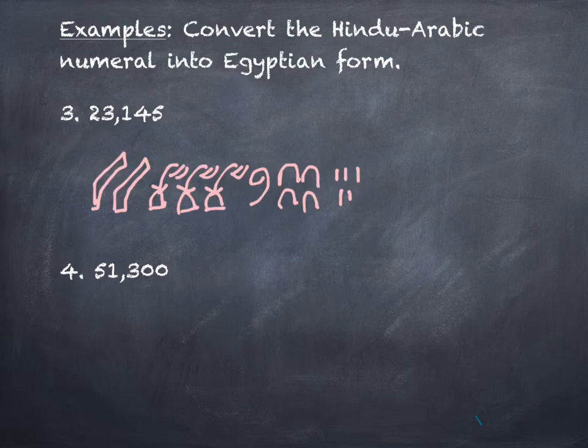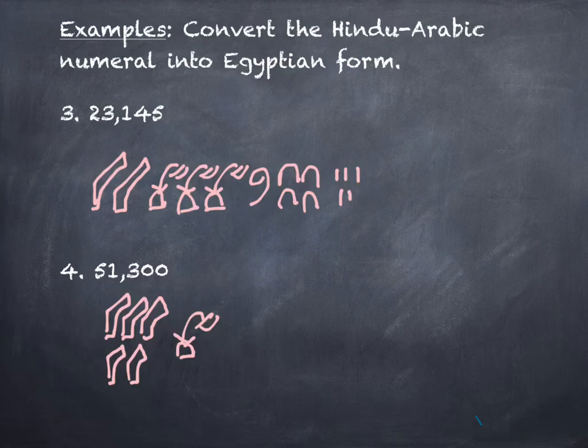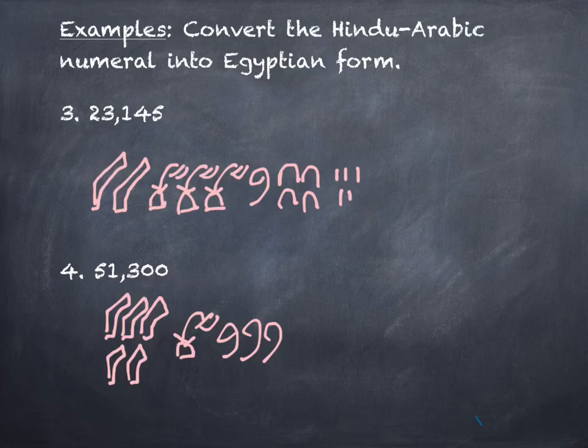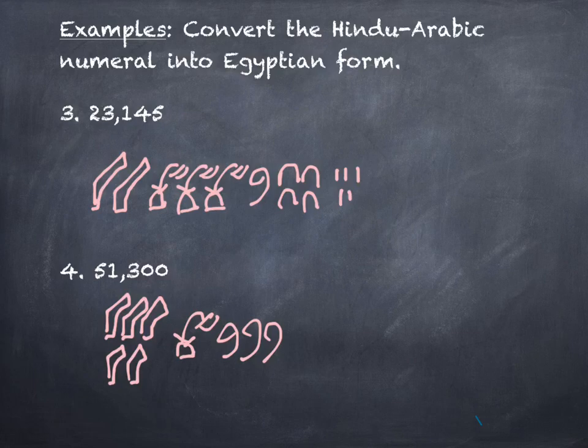How about the number 51,300? What's that going to be? Five pointing fingers. And then what? One flower and three scrolls. So evidently, the inherent problem in their system is that if you had something that was a nine in any of these locations, you'd have to write nine of them out. Nine strokes, I can do that. That's no big deal. Nine flowers, I'm not too keen on. Sound good? All right.